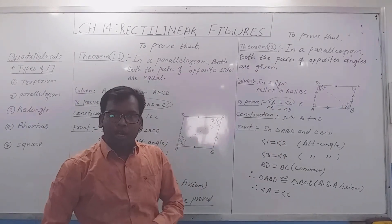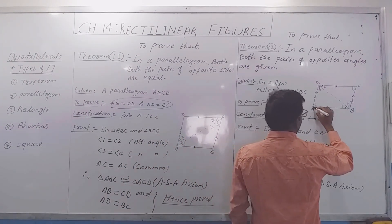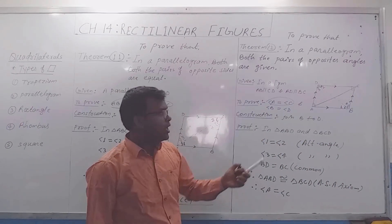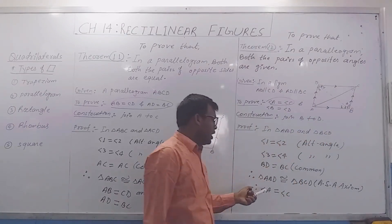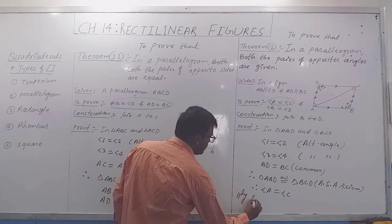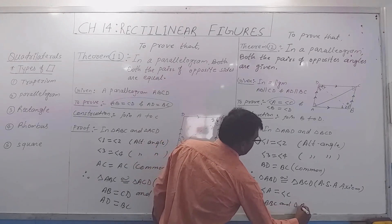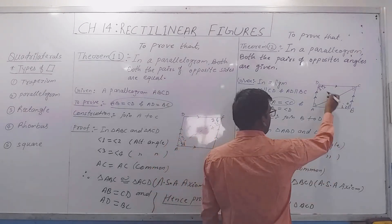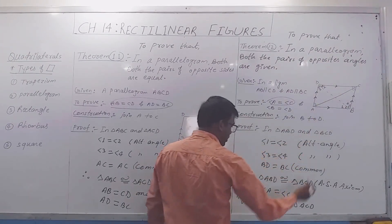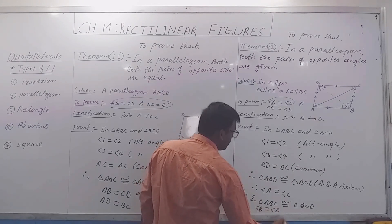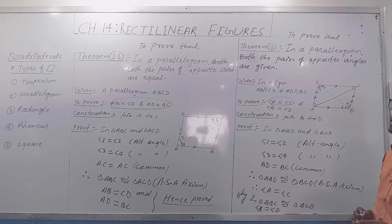Now we have to prove the second part: angle B equals angle D. For this, join A to C and consider triangle ABC and triangle ACD. By the same reasoning, these two triangles will be congruent. Therefore, angle B equals angle D. Hence, we have proved that angle A equals angle C and angle B equals angle D.